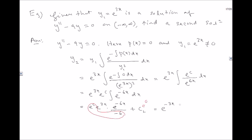This matches the other known solution from the fundamental equation. Since y₁ ≠ 0, y₁ and y₂ are linearly independent automatically, by the theorem. So the general solution is y = c₁e^(−3x) + c₂e^(3x) on (−∞, ∞).